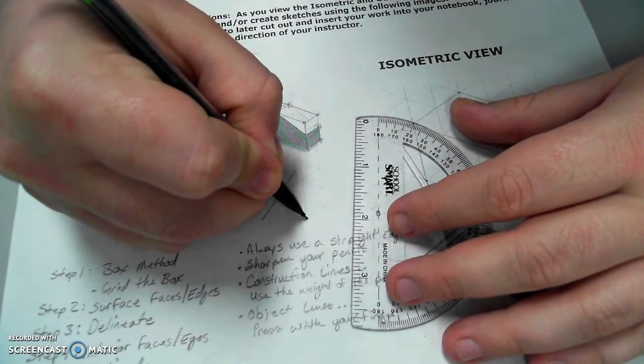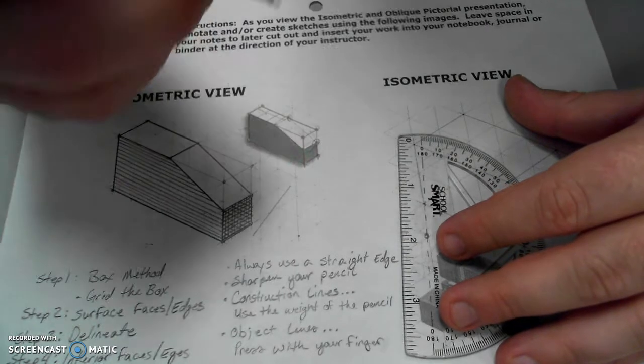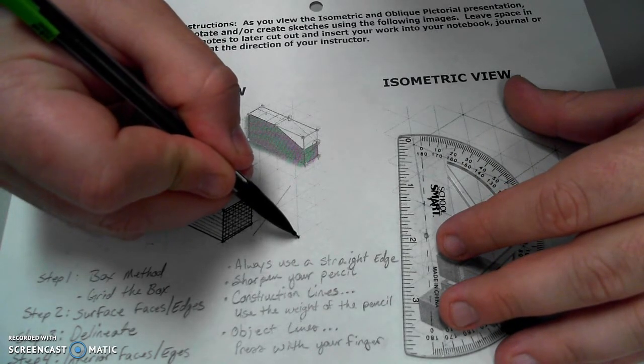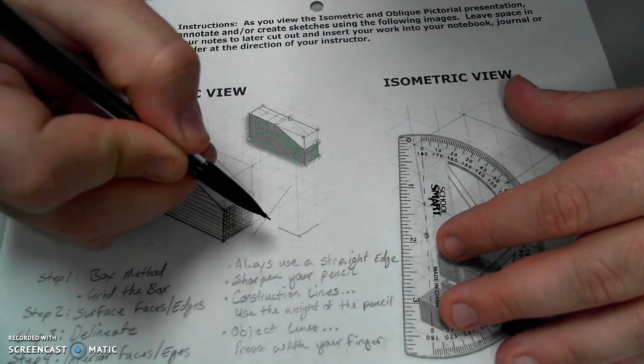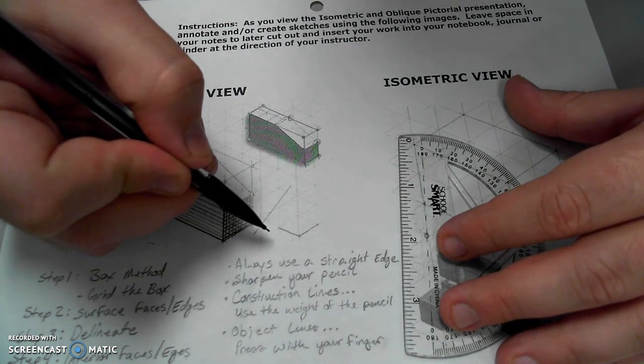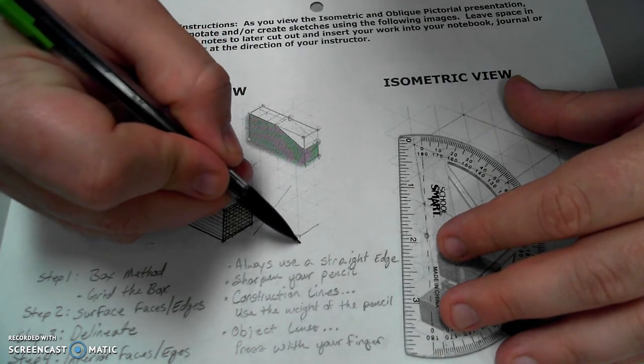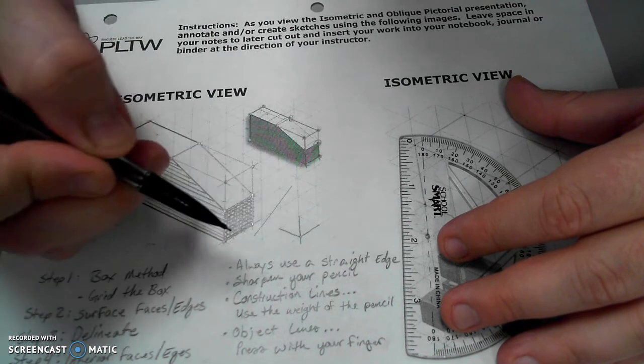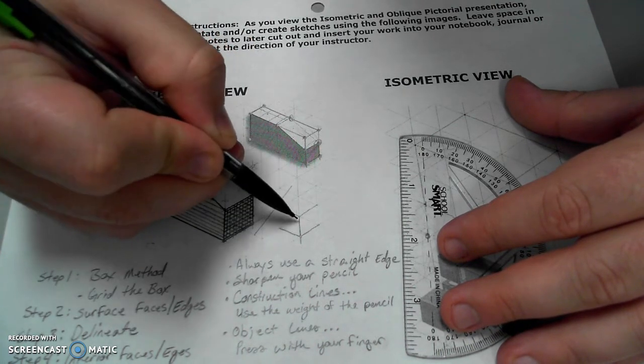Notice that if I start in this corner, on the isometric grid paper, I can find myself moving in depth and in width, most typical names for these, but it depends on the orientation of the object and height. Again, depth, width, and I have height.